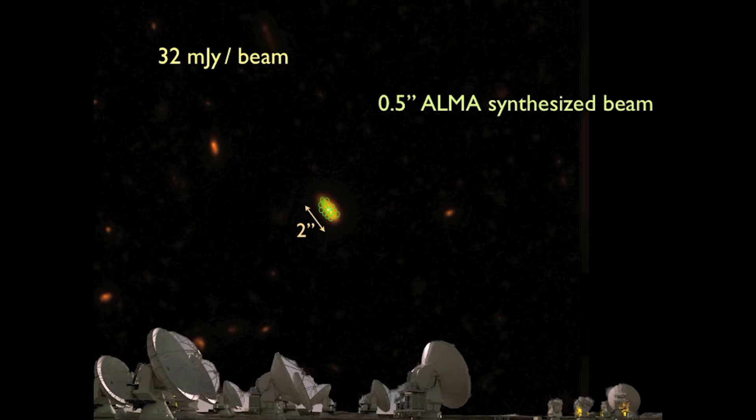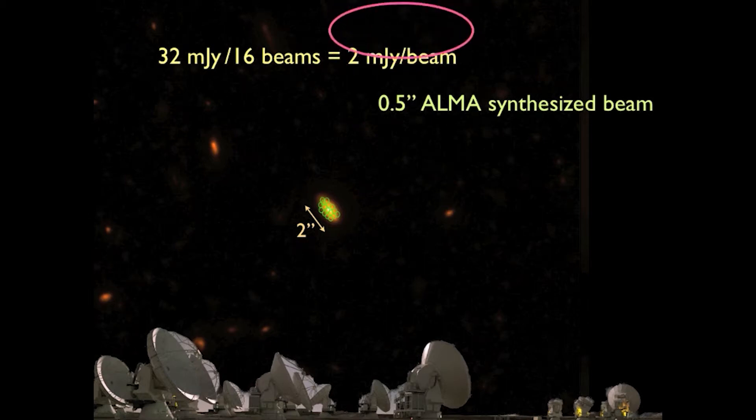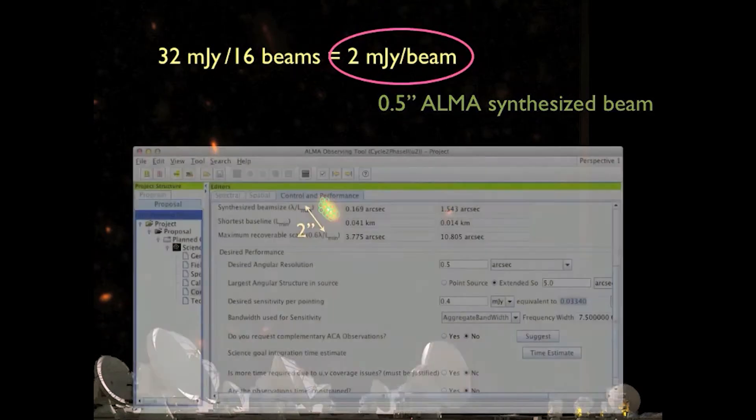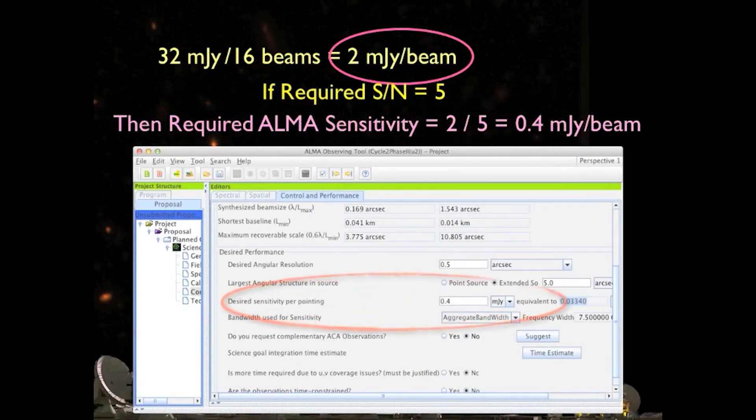This would mean that that 32 millijanskys, measured by the CSO beam, was spread across 16 ALMA beams. The expected flux density in the ALMA beam would thus be only two millijanskys per beam. If you wanted a 5 sigma detection, you'd need a sensitivity of 0.4 millijanskys per beam.